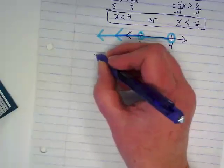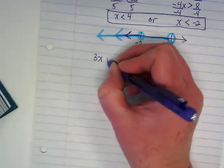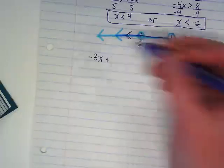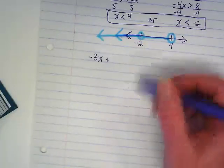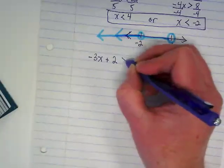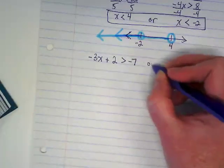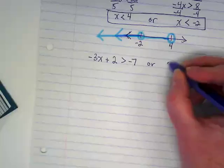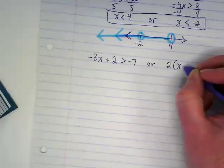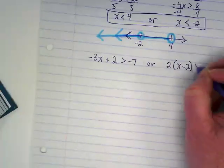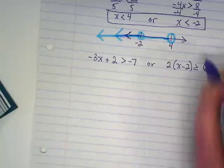Okay, I would like you guys to try this or inequality on your own, and then we will compare to my work. I'm sorry, I didn't write the negative. That's a negative 3x plus 2 is greater than negative 7, or 2 distributed to x minus 2 is greater than or equal to 6.